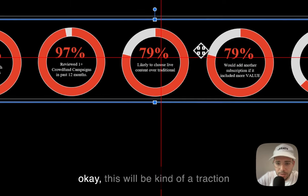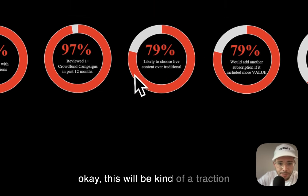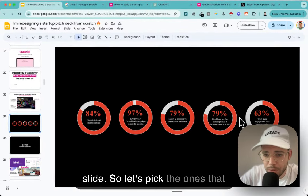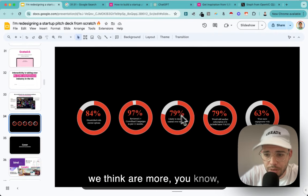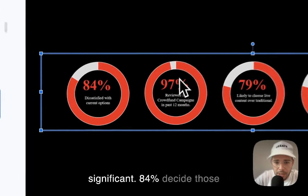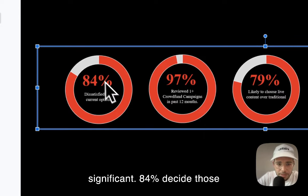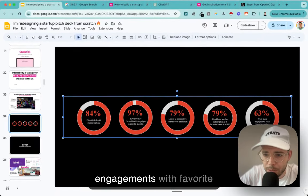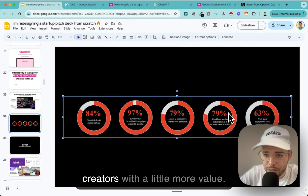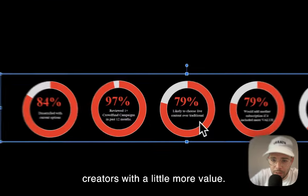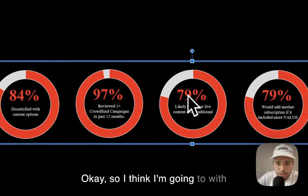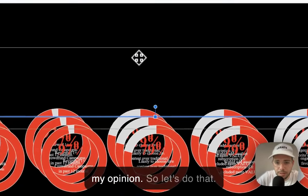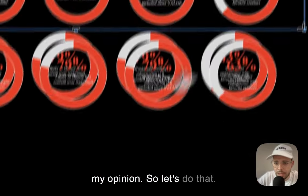Let's pick the survey numbers that are most significant. '84% dissatisfied with current options,' then maybe 79% and 63% - I think they're more significant. Let's go with those three. This is a suboptimal situation. In the perfect world you'd have a waitlist - 'hey, we have 10,000 people on our waitlist' - or pre-sales. Especially in B2C you can do pre-sales. That's nice validation.